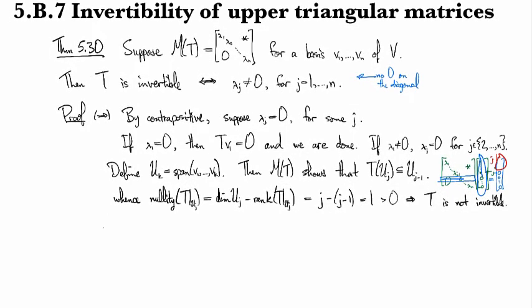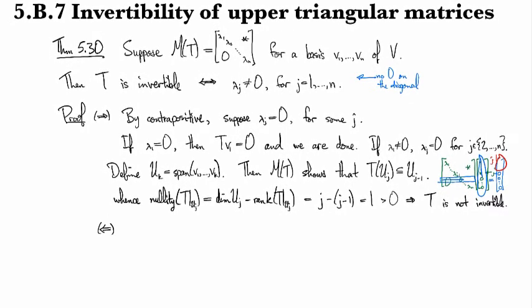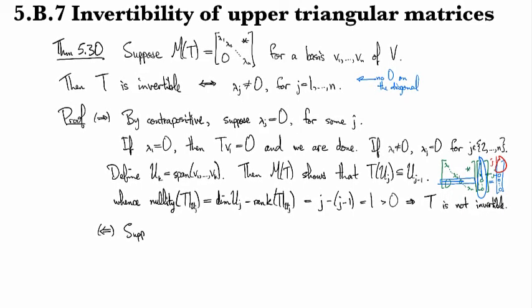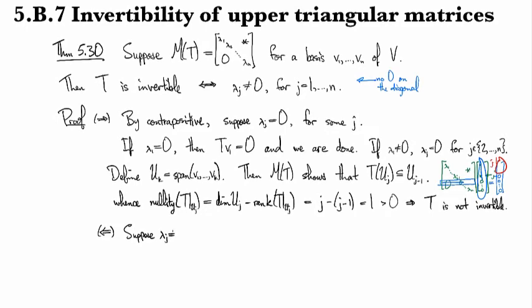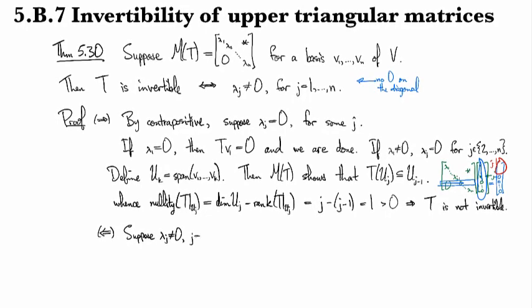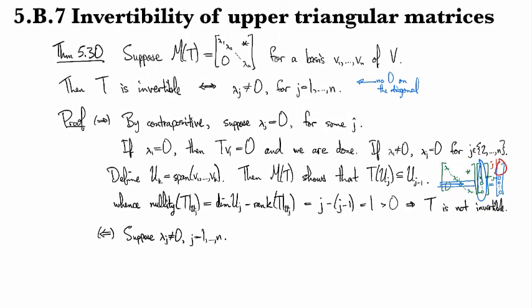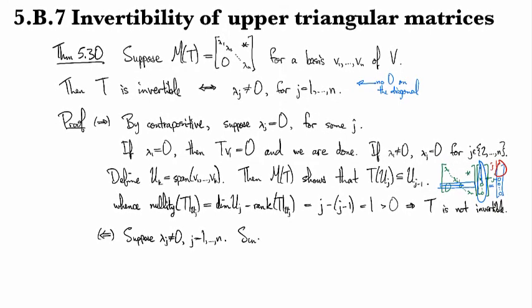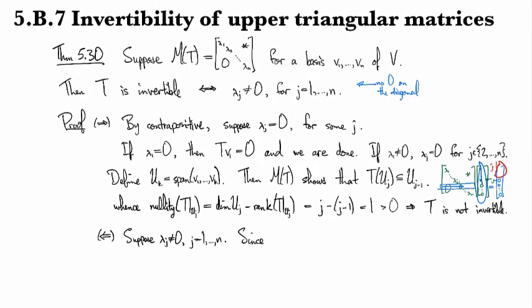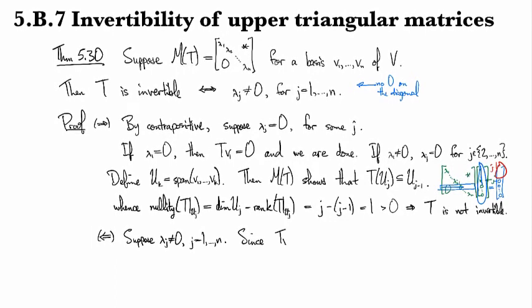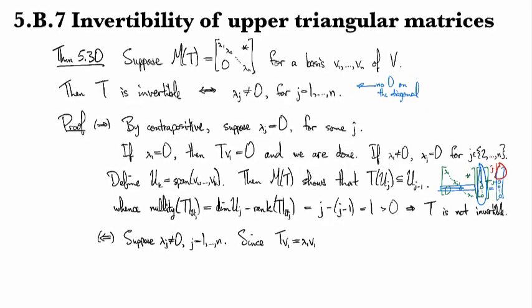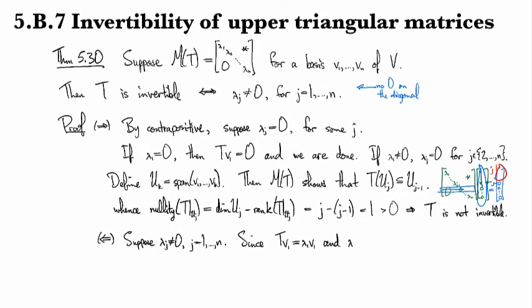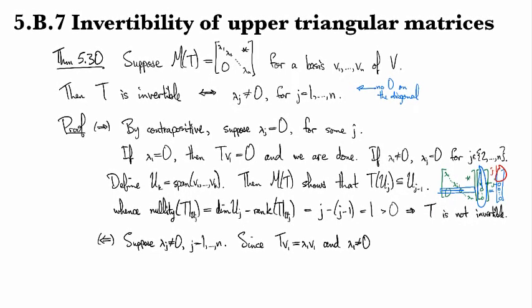All right. For the reverse direction, we suppose that all the lambda_j's are not equal to zero. Since T(v_1) = lambda_1 v_1 and lambda_1 is not zero...